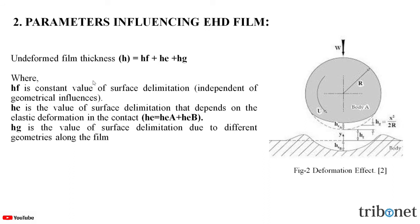Next, let us learn about the parameters which are influencing the EHD film. In order to determine the undeformed film thickness H, we have to add the different thickness values: HF, which is the constant value of the surface delimitation, which is independent of the geometrical influence; HE, which is the value of the surface delimitation due to the different geometries along the film. In this figure, we can see the different film thickness, and the undeformed film thickness is the summation of HF, HE, and HG.